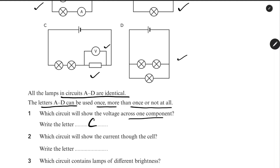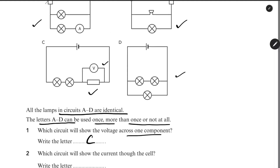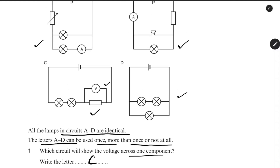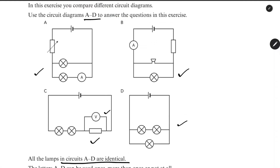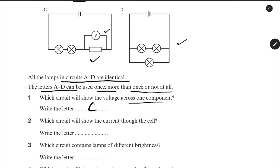Which circuit will show the current through the cell? You want to measure the current through the cell using an ammeter. If you connect it through one of the branches, you measure the branch current. But to measure the current through the cell itself, the answer is B.